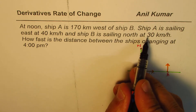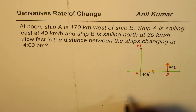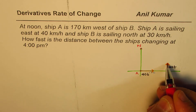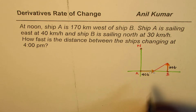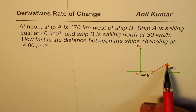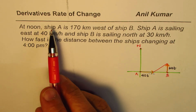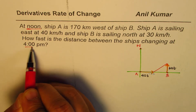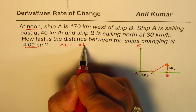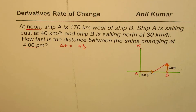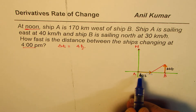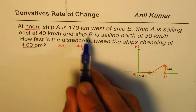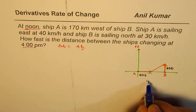Since ship B's speed is 30, it covers a distance of 30t in time t. The distance between the ships at any instant t is what we need to track. We need to find how fast this distance is changing at 4 p.m. — that is, 4 hours after noon. Ship A started 170 kilometers west of ship B. The horizontal distance remaining between their positions will be 170 minus 40t.